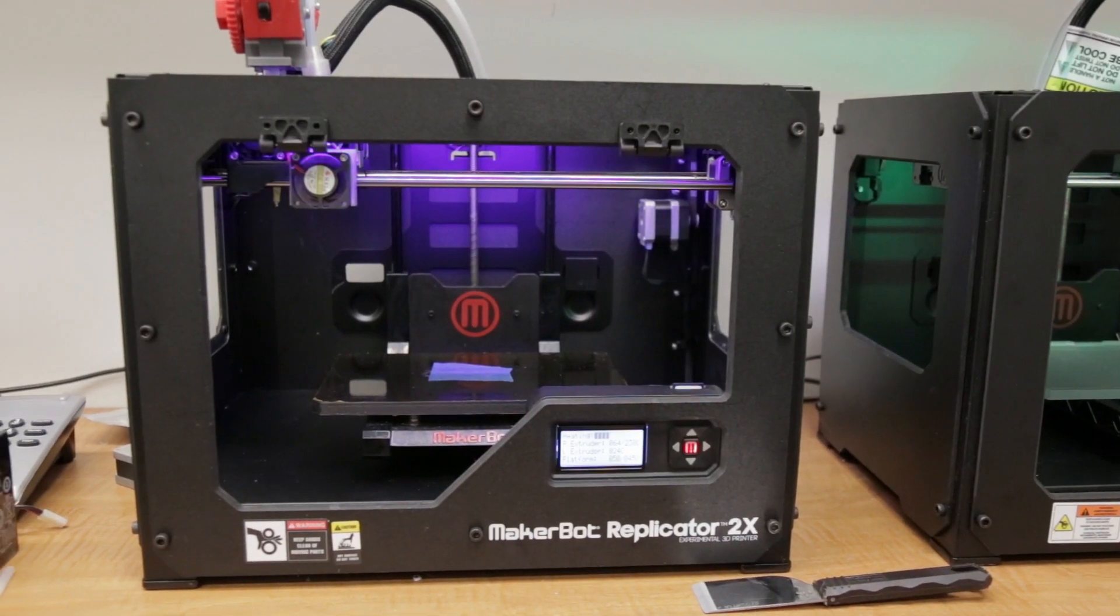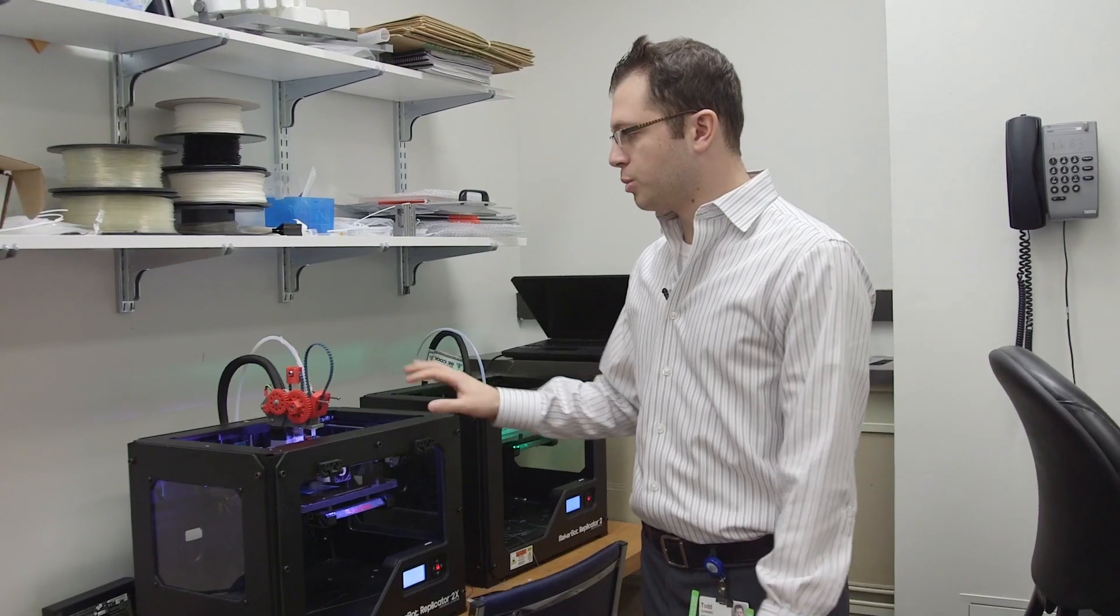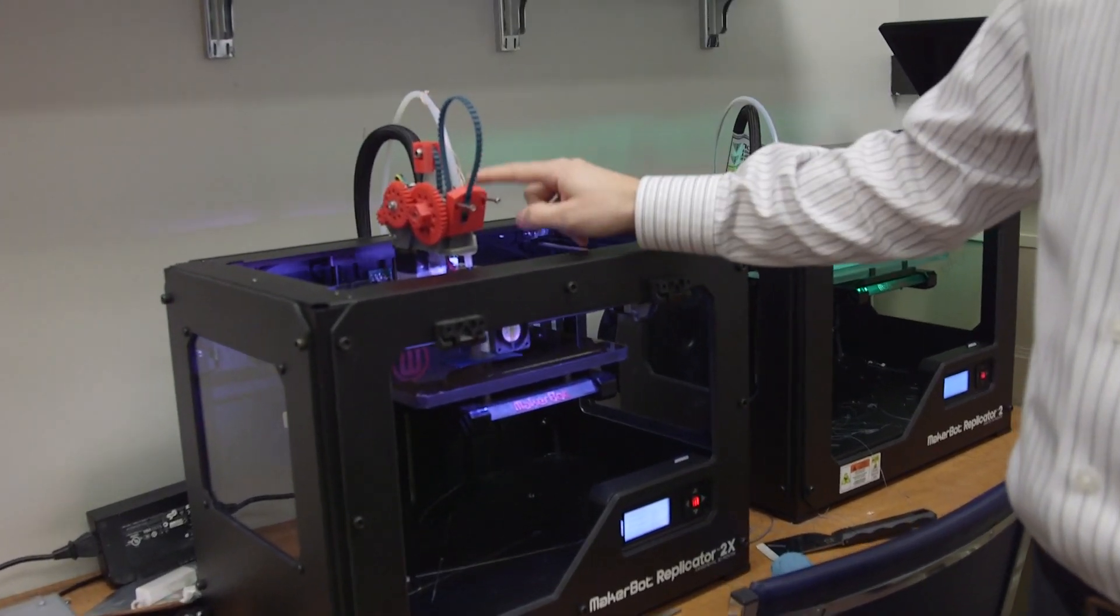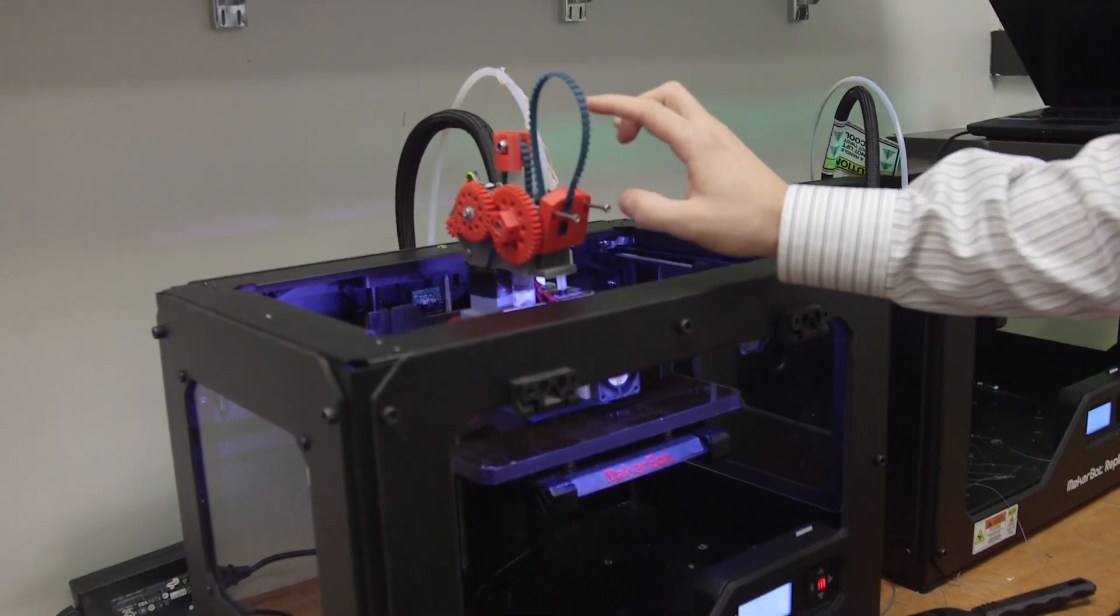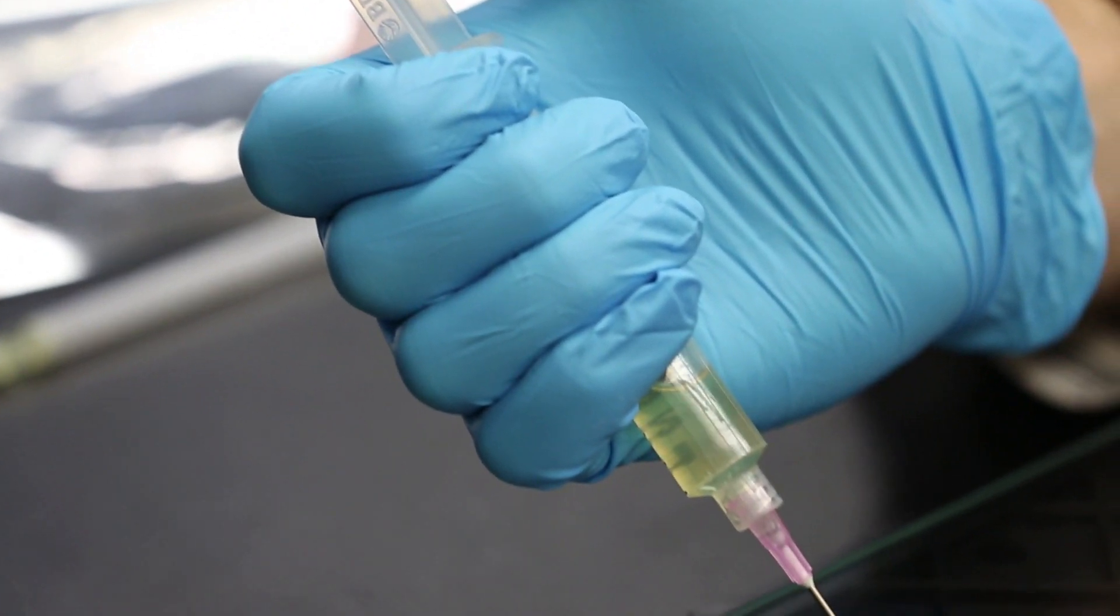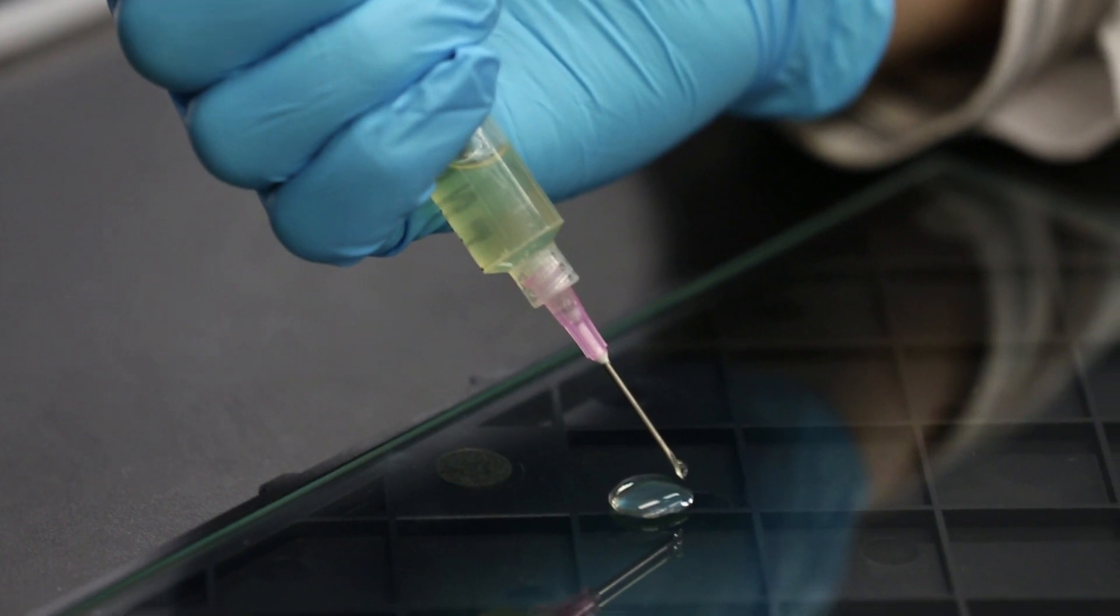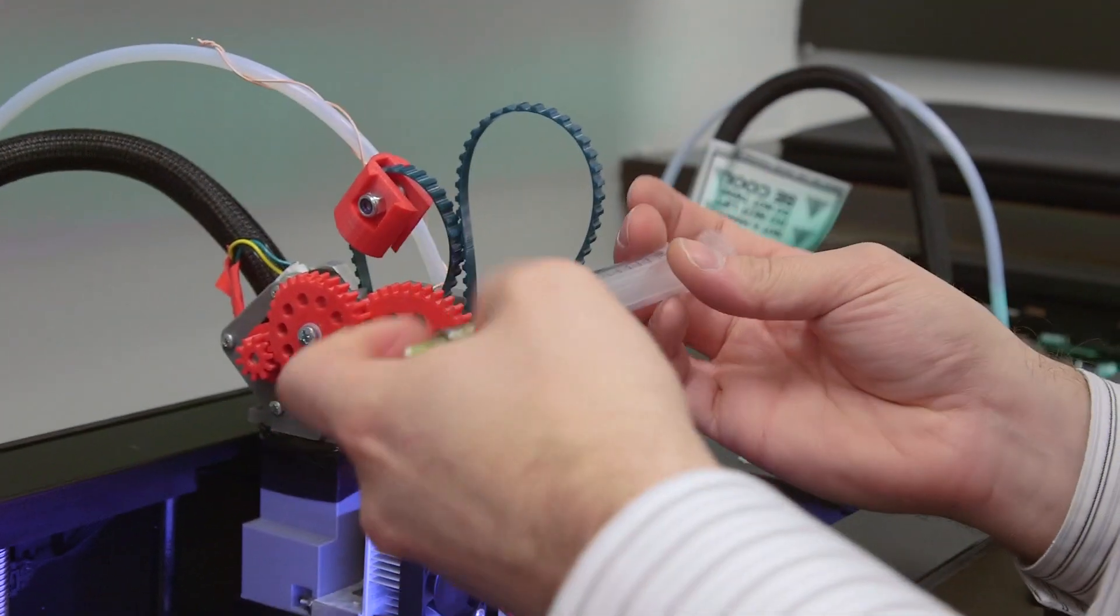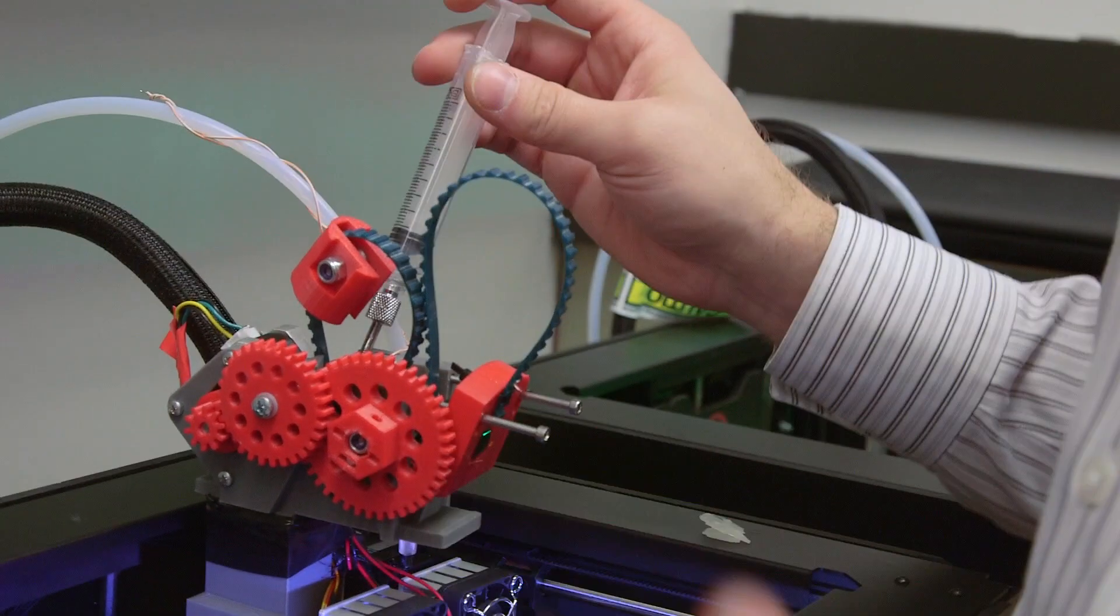This is the MakerBot Replicator 2X, and we've modified all of the extruder heads to be able to accept PLA and also to accept a syringe filled up with living cells and what we call bioink. So in the bioink is collagen, food for the cells, and all this type of media, and our chondrocytes, which are the cartilage-making cells.